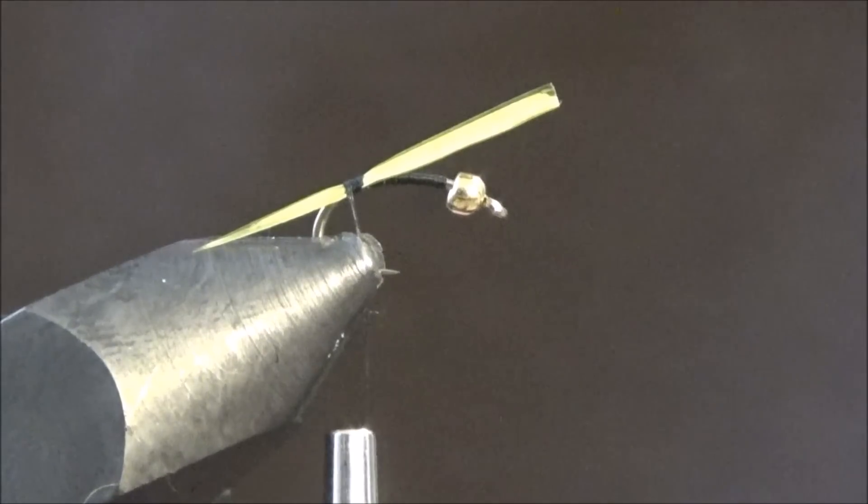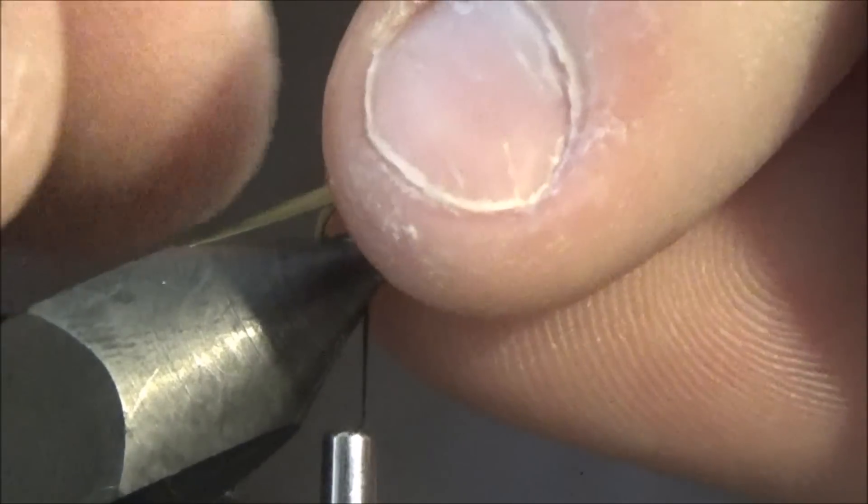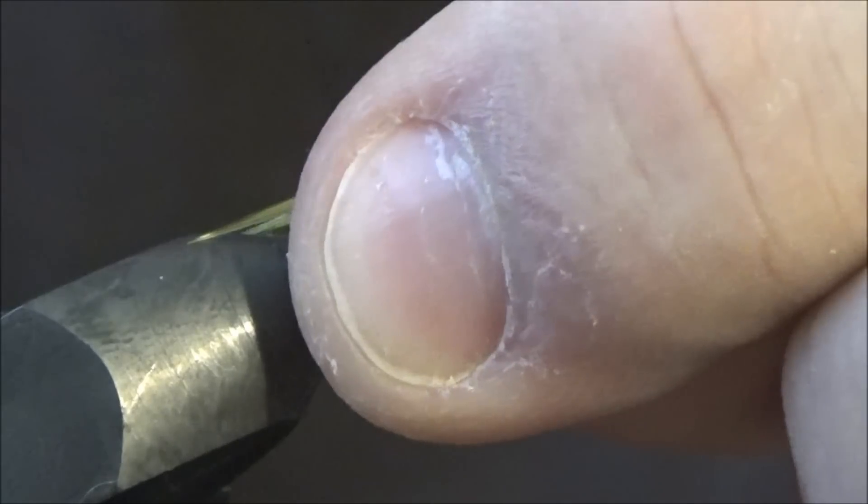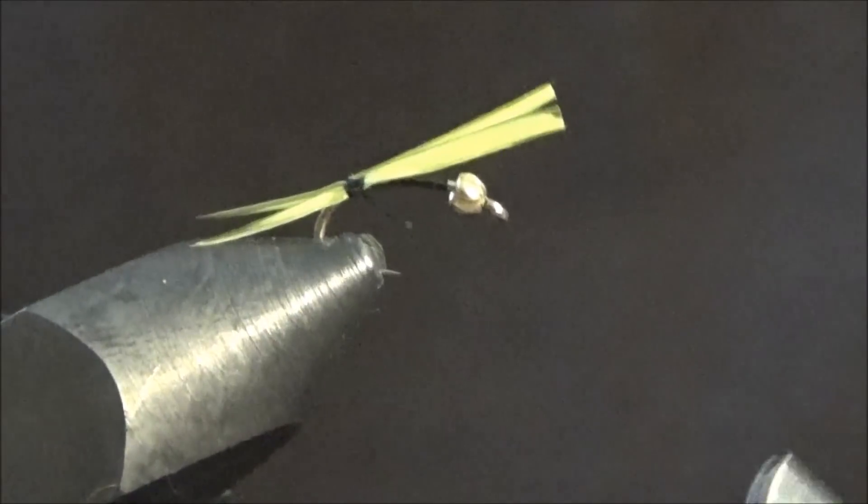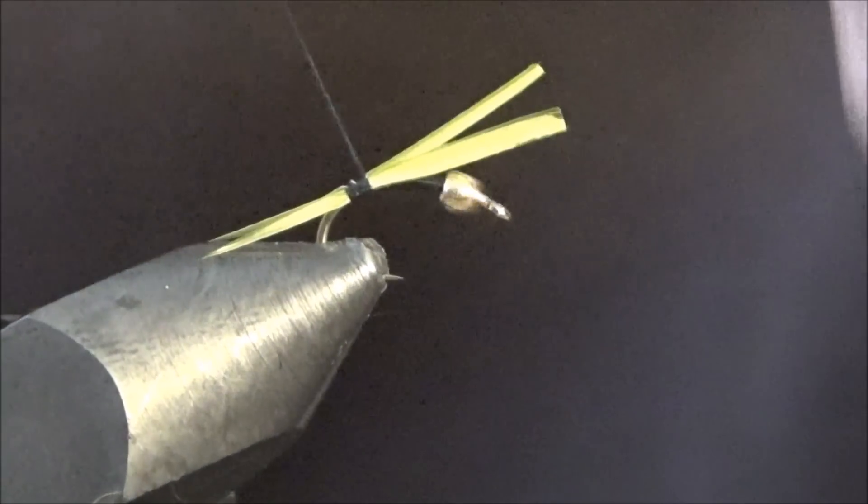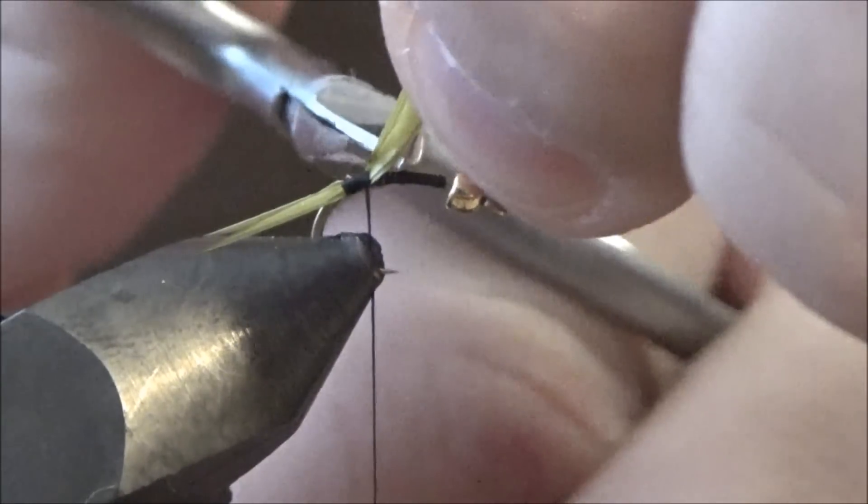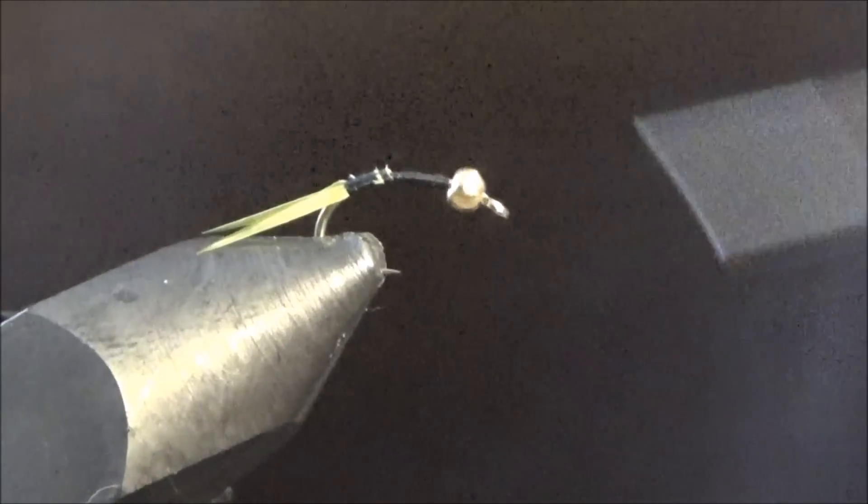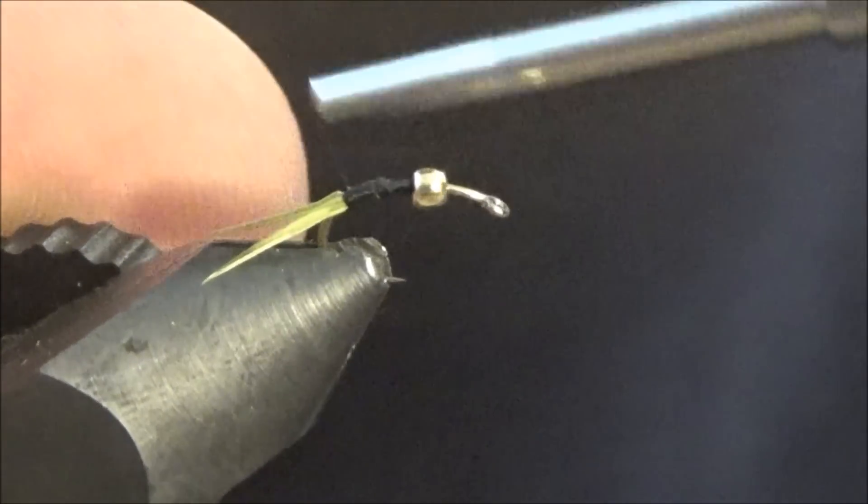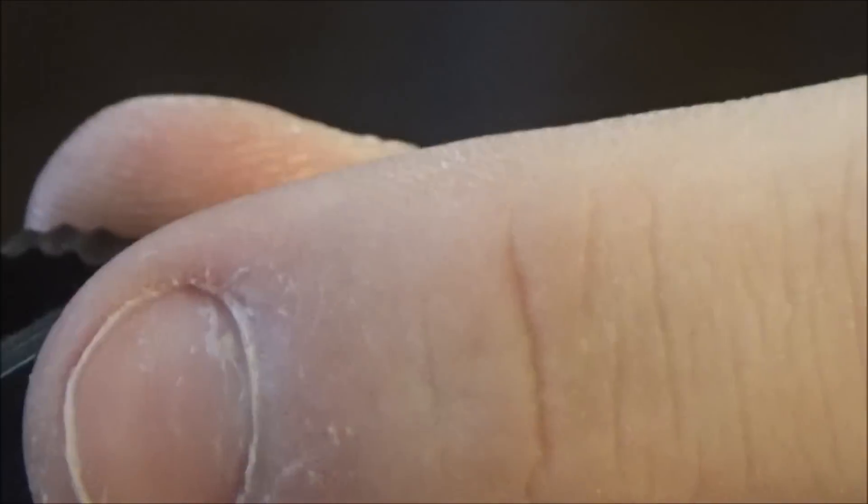Now you take your other one, use its natural bend to make it go the other way, size it up to the biot you already placed in. Secure that down, make sure they're all good, and then just secure them with a couple wraps, snip them off. Okay, that's how it should look. Got the two biots in for the tails.